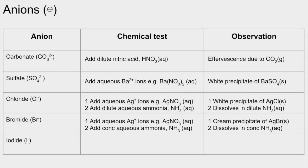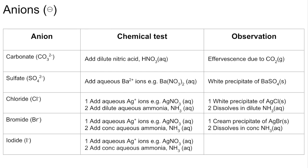Finally, iodide: add aqueous silver ions and concentrated aqueous ammonia. You'd expect to see a yellow precipitate of silver iodide, but that is insoluble in concentrated aqueous ammonia.